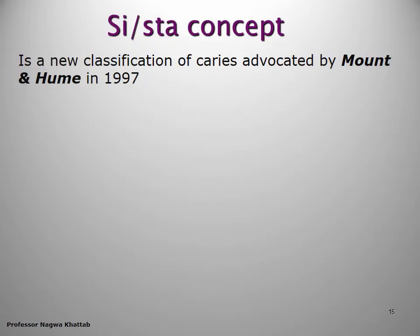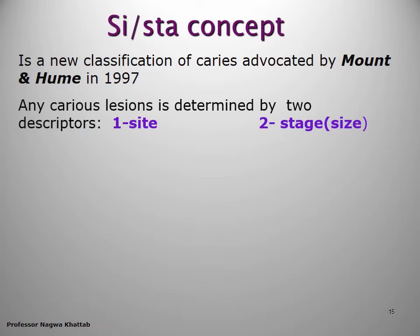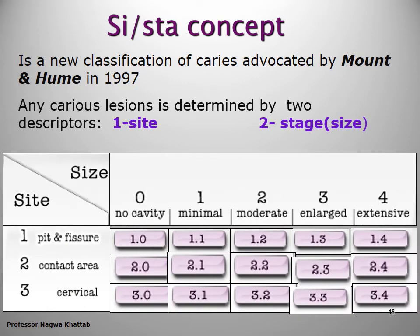Mount and Hume in 1997 developed a new classification based on two dimensions: site and stage. There are only three sites — site one: pits and fissures; site two: the contact area with anterior or posterior teeth; site three: the cervical area. The stages are five, starting from no cavitation, minimal, moderate, enlarged, and extensive.